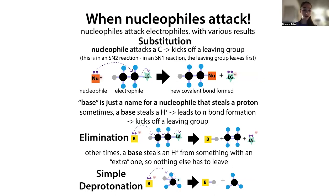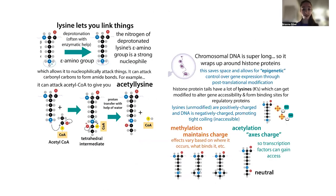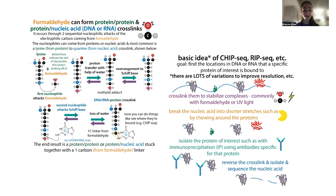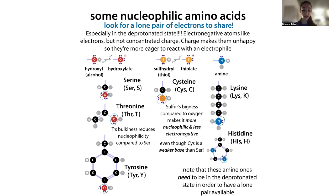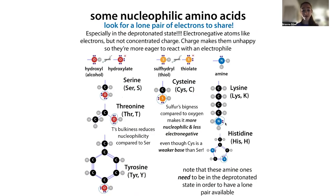Lysine typically does steal a hydrogen, and once protonated it's not a great nucleophile. Its ability to act as a nucleophile and link things is what makes all these reactions possible — but to actually act as a nucleophile, the lysine needs to be deprotonated. Deprotonated, it has a lone pair of electrons that's highly electronegative and will seek out and attack an electrophile.